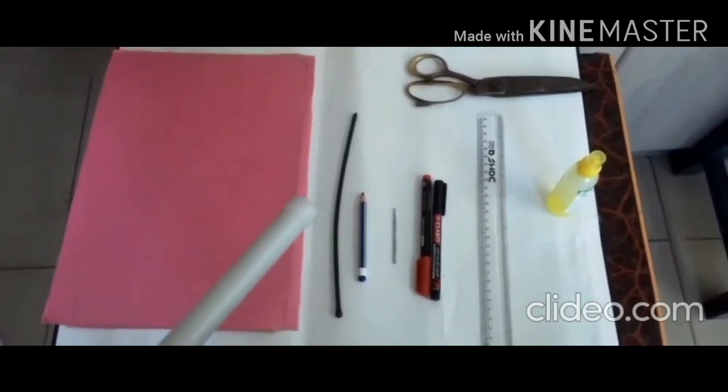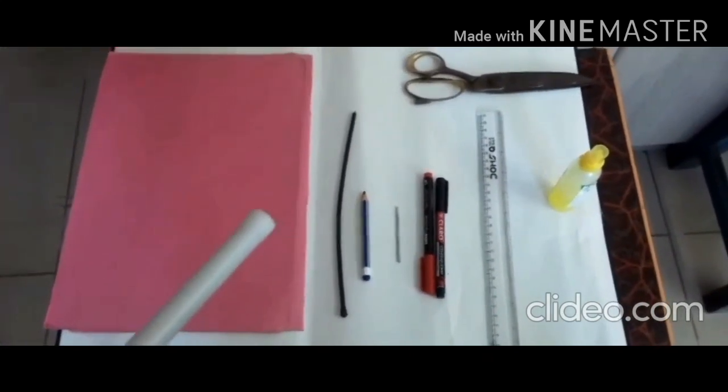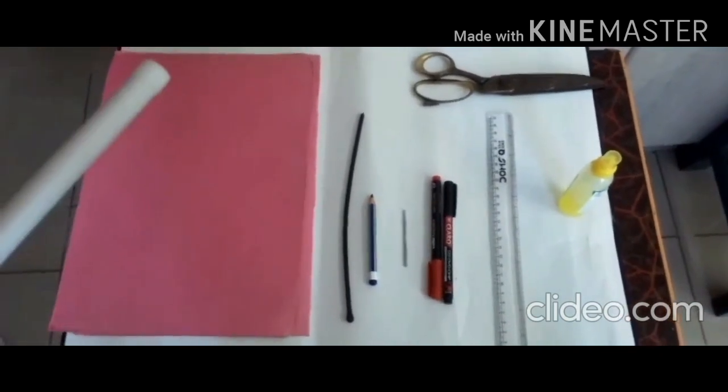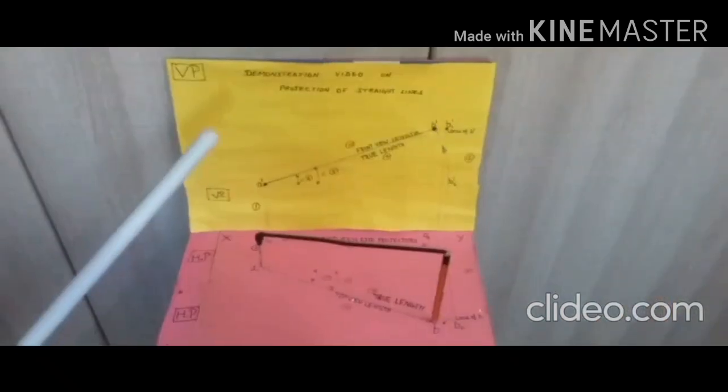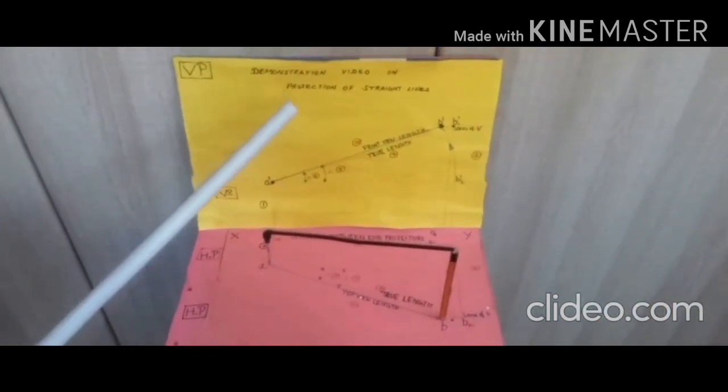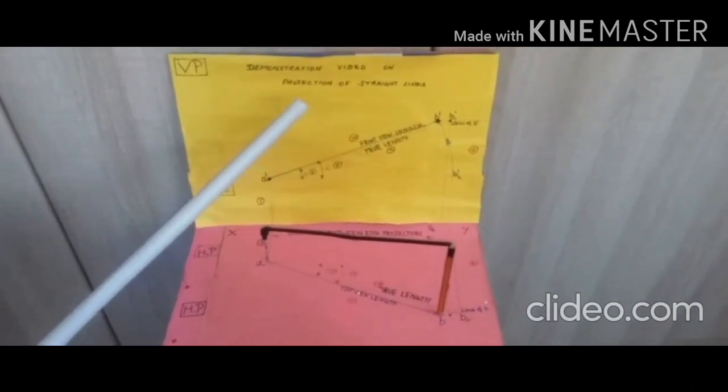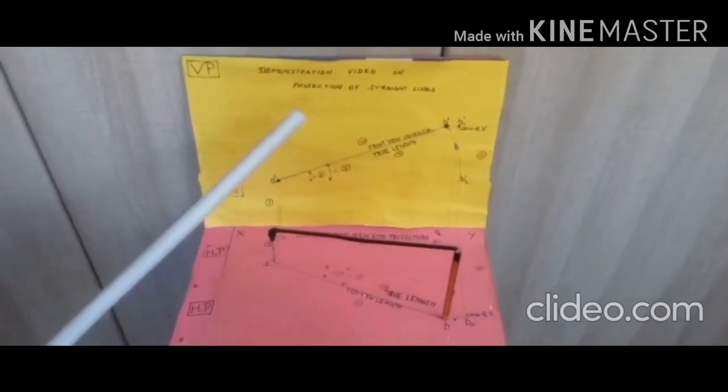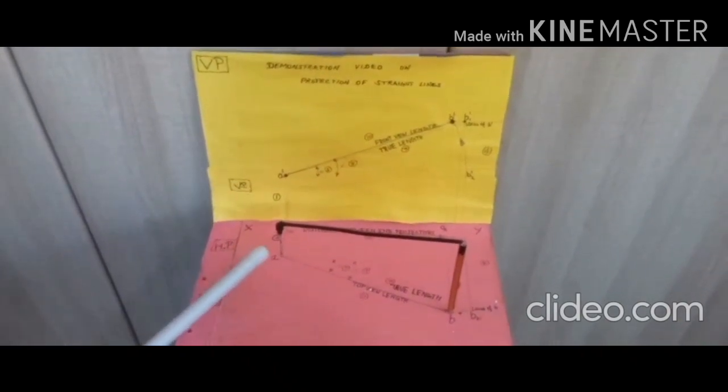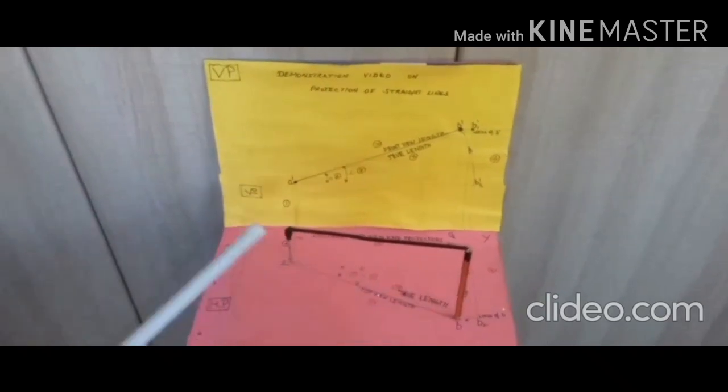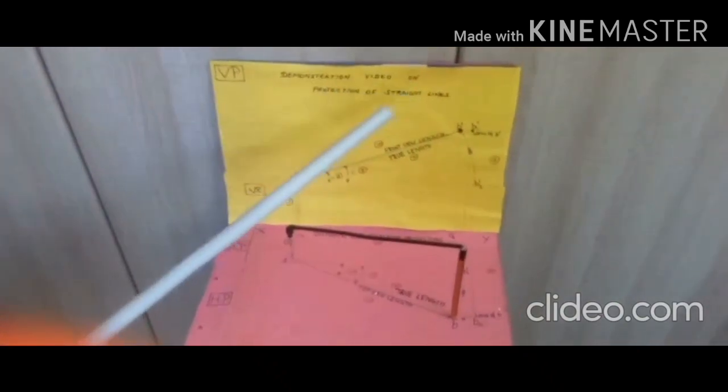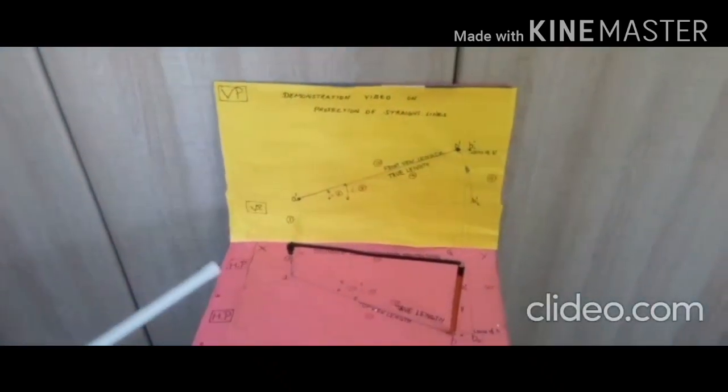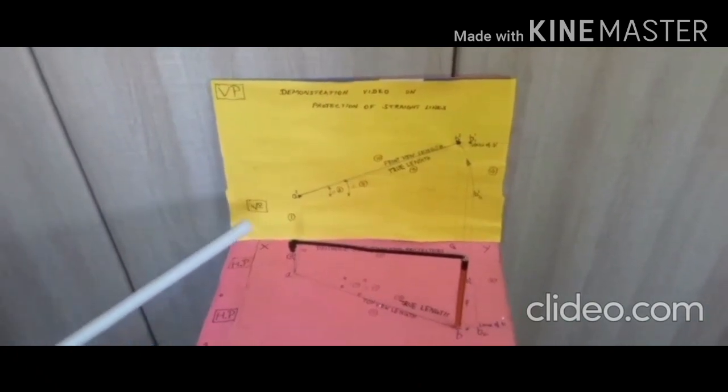I am going to describe the steps involved in drawing the projection of straight lines inclined to both the planes by using rotating line method. Step number one: construct the reference line XY and mark the front view and top view of endpoint A of the line AB on VB and HB as A' and A respectively.